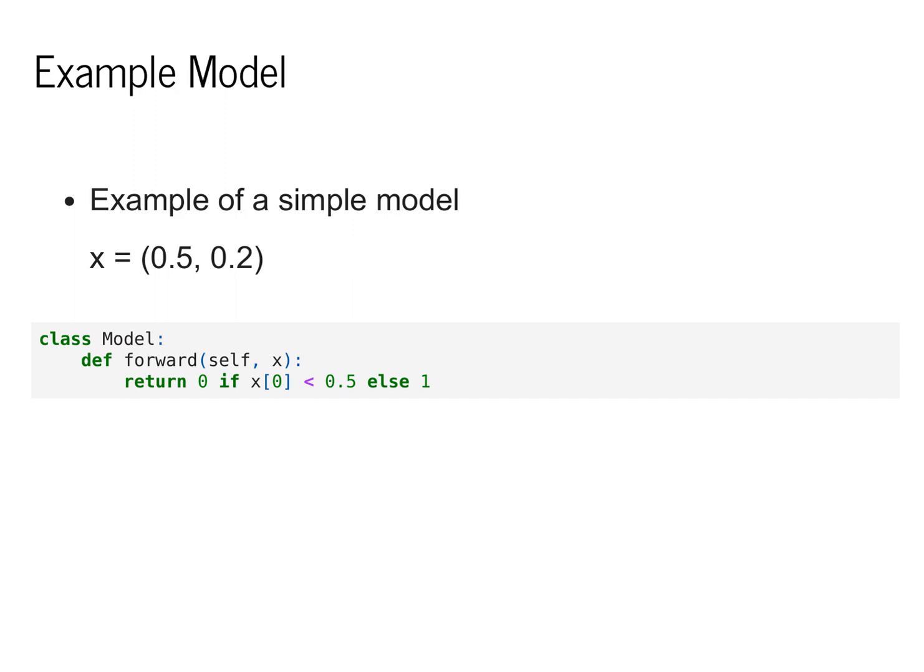So let's look at some example models. For instance, one model is to simply make a decision about which class we think a point is based on a hard rule. So this model here has a function which we'll call forward that simply decides to return the value 0 or 1 based on a single feature of the input data. So let's say we have a point x that corresponds to 0.5, 0.2, and we're passing it into this model.